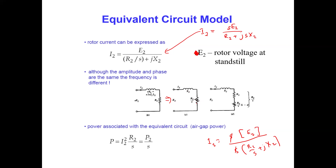For simplification in calculating output power, R2/s is divided into two components. The term R2 represents the rotor copper losses (I²R2), while the term R2(1−s)/s represents the mechanical output power. When summed together they give R2/s, but this separation allows us to identify how much contributes to rotor losses and how much contributes to mechanical output power.